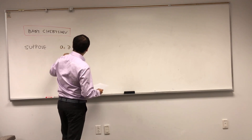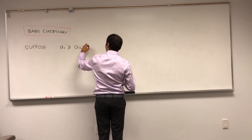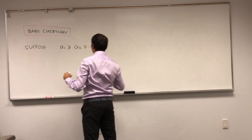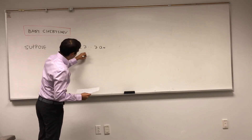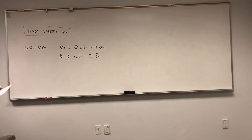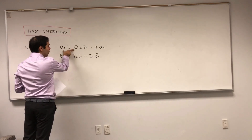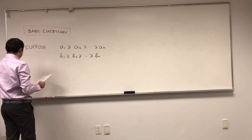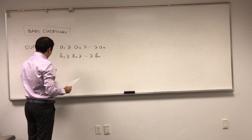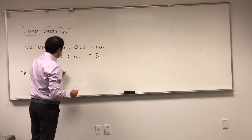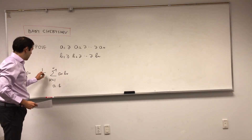Suppose you have a finite sequence — a decreasing list of finite numbers: a₁, a₂, up to aₙ. And the same with bₙ: b₁, b₂, ..., bₙ. Then what Chebyshev's Sum Inequality says is something really cool. Suppose you take the average of the dot products — that is, the sum from k equals 1 to n of aₖ times bₖ — so think of this as a dot b — and you take the average.